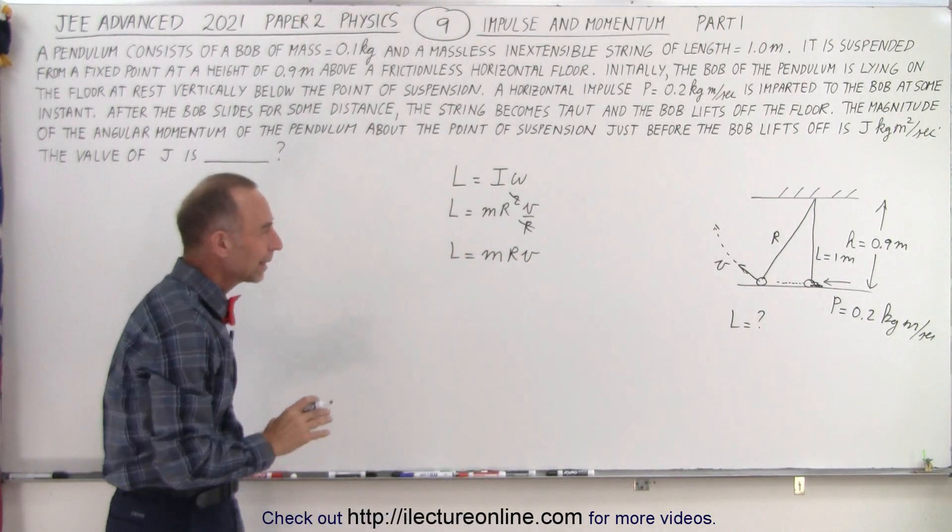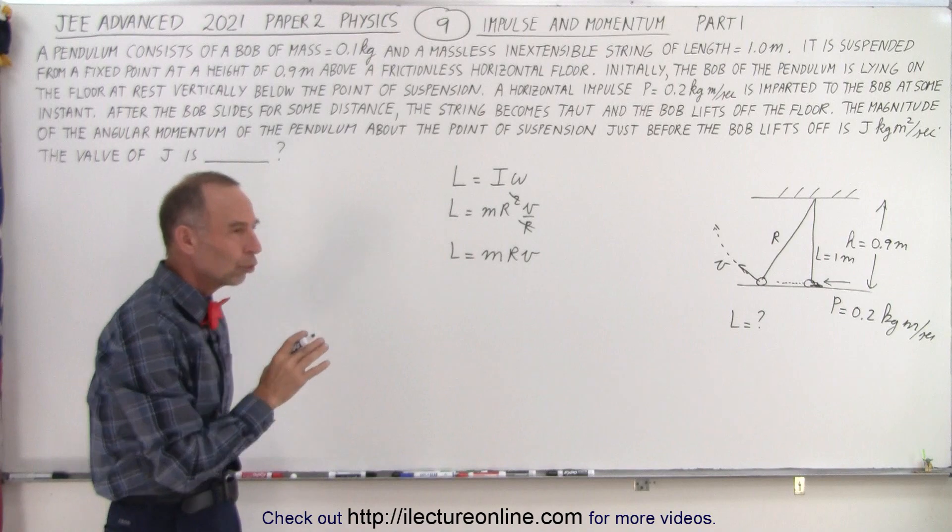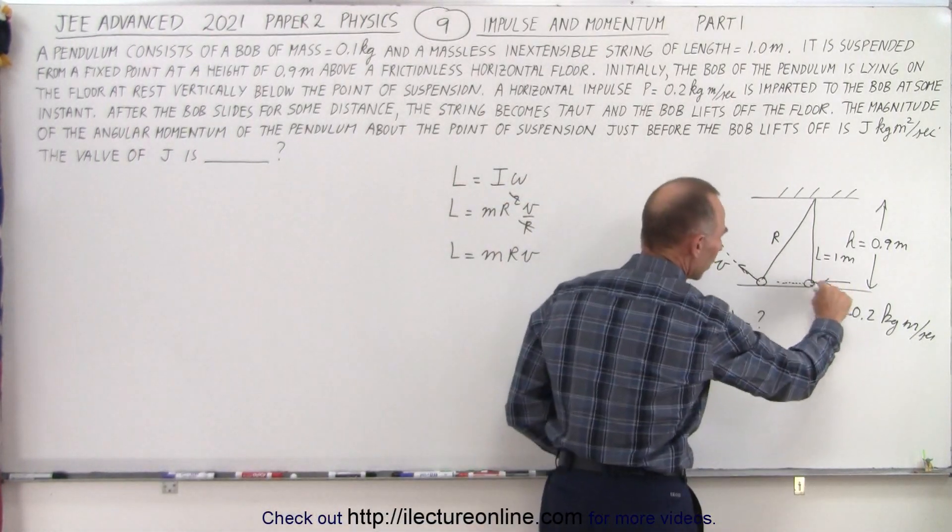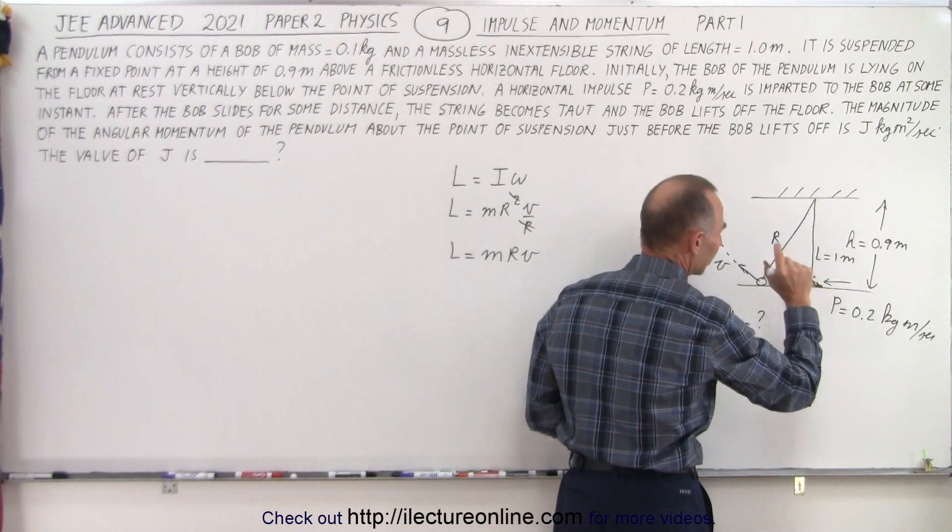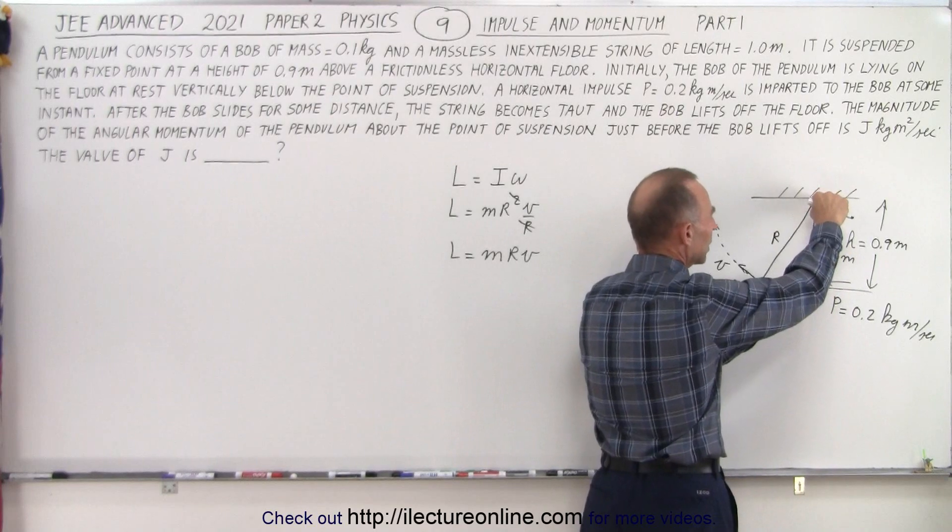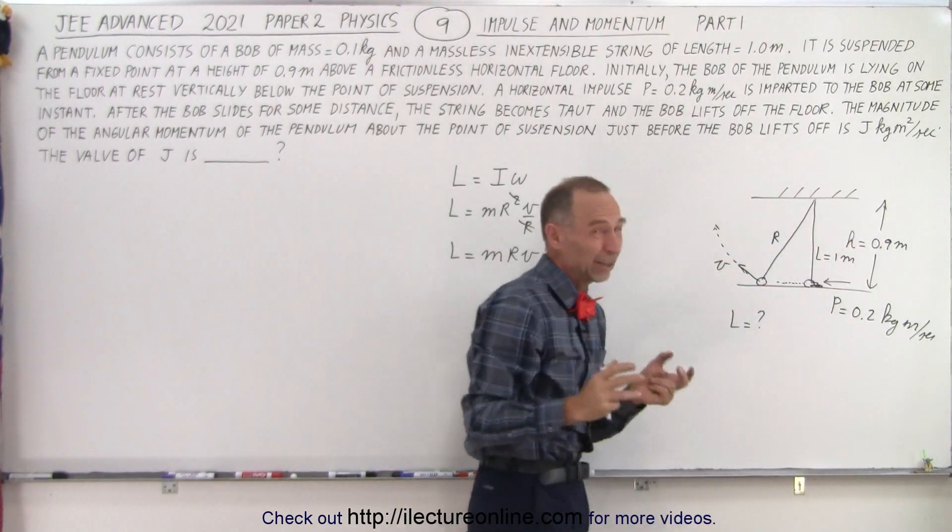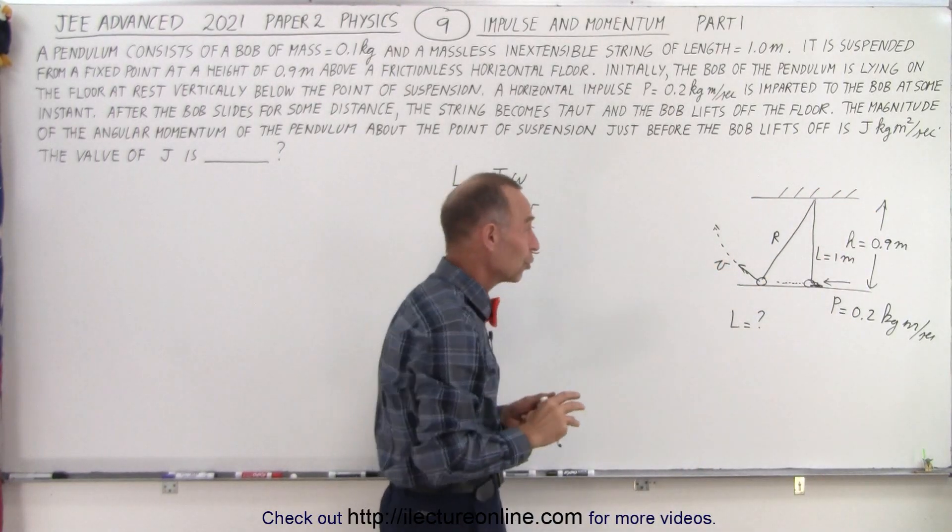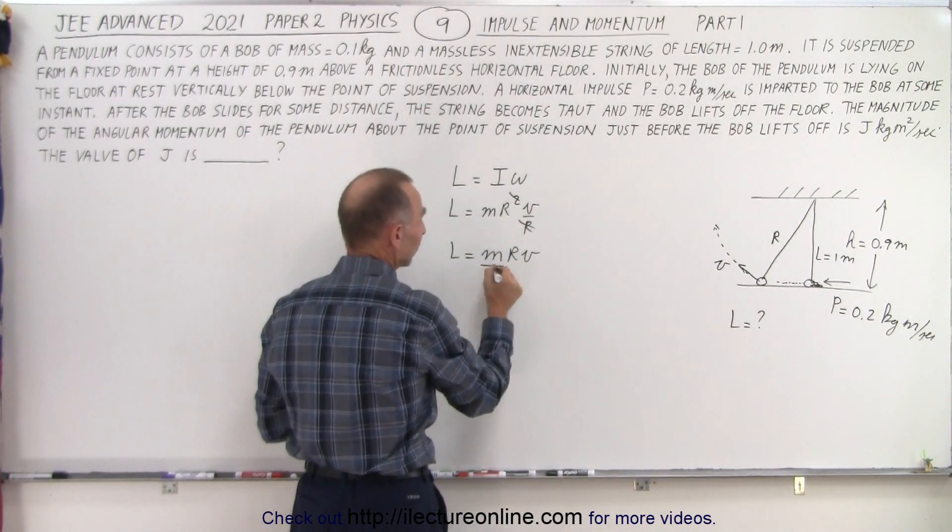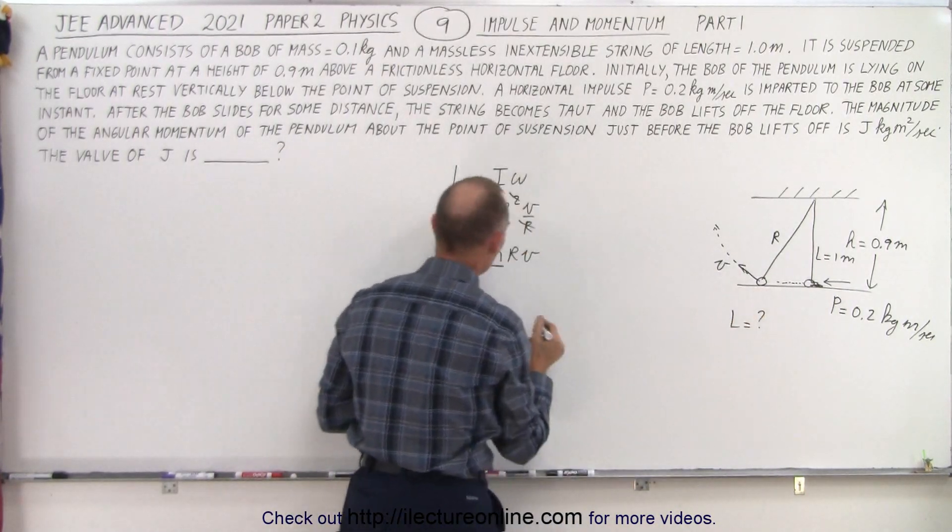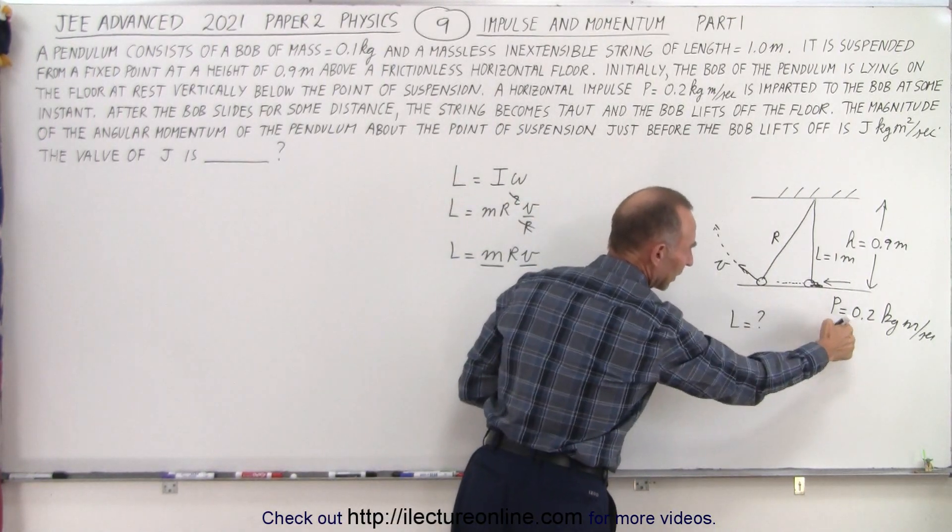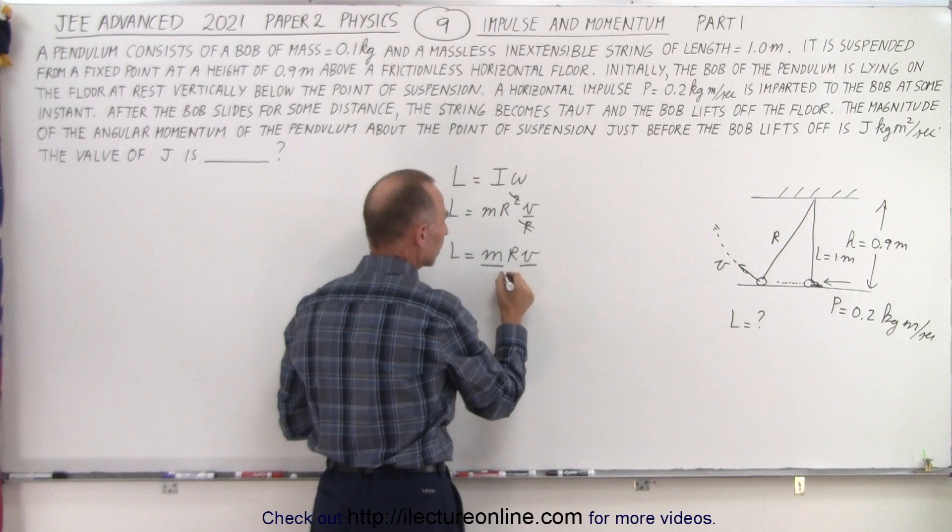That angular momentum should also be equal to the equivalent linear momentum as it's moving across the floor right here. However, r here is the length of the string and r here is equal to the height. The question is which of the two are we going to use. We can look at the mass of the bob which is given, the velocity which we can figure out based upon the impulse, and then the r.